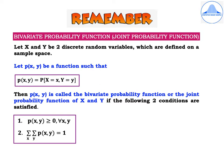The first condition is p of x comma y is greater than or equal to 0 for all x comma y, and the second is double summation over x and y of p of x comma y is equal to 1. This is very similar to the PMF we have learnt, where the conditions were p of x greater than or equal to 0 for all x, and summation over x of p of x equals 1.